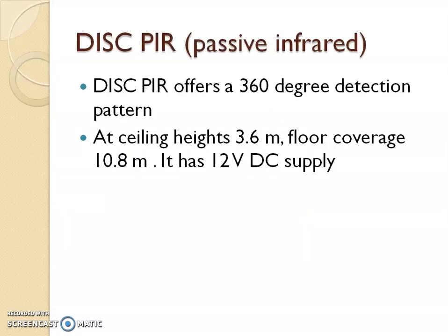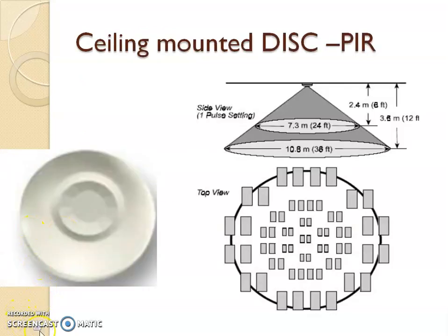The next one is the Disk PIR, which is Passive Infrared Detector. Disk PIR offers a 360 degree protection pattern. It is installed in a ceiling at 3.6 meters height and can work up to 3.6 meters. The floor coverage is approximately 10.8 meters and it uses a 12 volts DC supply. As you can see in the diagram, the disk PIR is installed at the ceiling and the total diameter covered is around 10.8 meters.